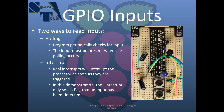In polling, the program periodically checks to see if there is an input. One of the limitations of this is that the input needs to be present when the polling occurs. If we were in a classroom and the input is somebody raising their hand, if the teacher's looking at the chalkboard when the hand goes up, and they put their hand back down before the teacher turns around, the teacher's not going to see that the hand was put up. It's the same way with polling — if the input isn't there when the program polls for it, it won't ever know that it occurred.